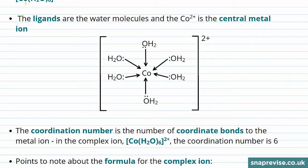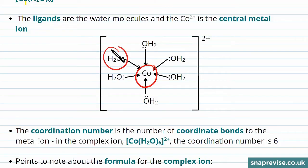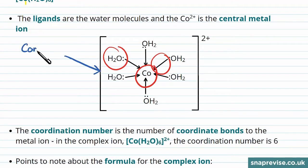We often show complex ions in notation like this. We have the central metal ion, which is cobalt. We have the ligands showing their lone pairs, which in this case are the H2O molecules, and the arrows pointing inwards show that it is a dative covalent bond, or a coordinate bond. We have square brackets to show that it is a complex ion, and the charge is shown outside the brackets in the top right-hand corner.